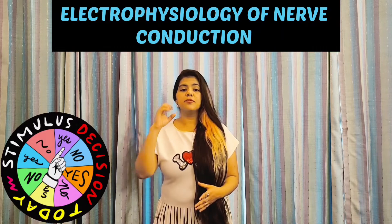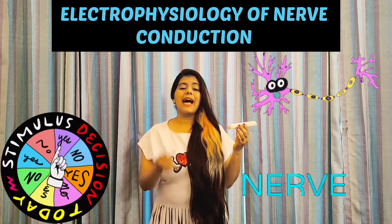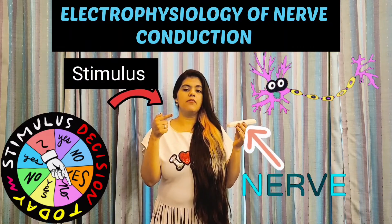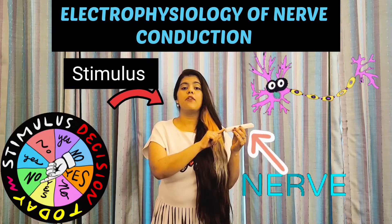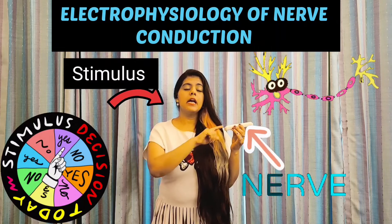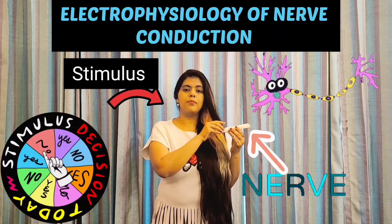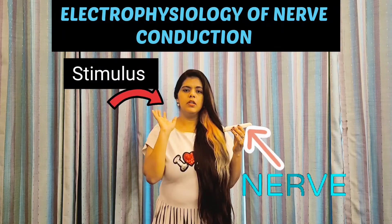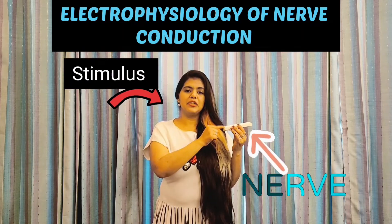First, we need a stimulus which can excite the nerve. This is the nerve, and this is the stimulus we need so that changes occur in the nerve. Right now this nerve is at resting position with a potential of minus 70 millivolts (mV). So at present, this nerve is at resting position with a potential of -70 mV.